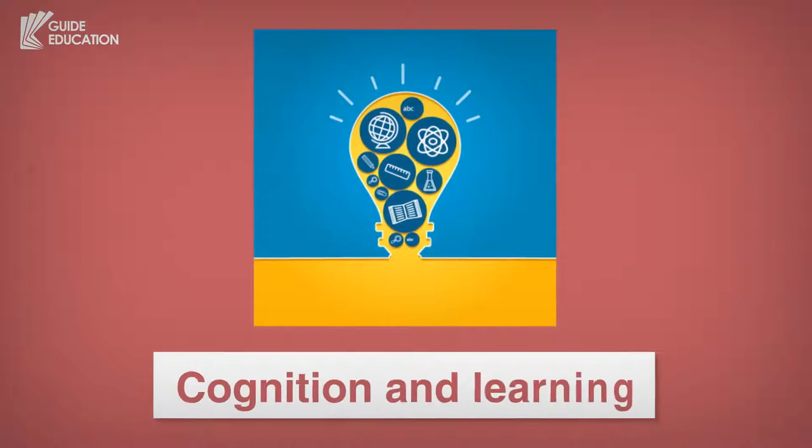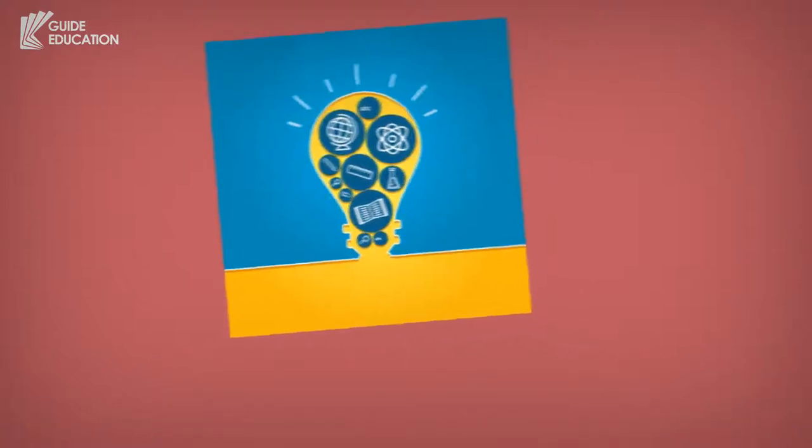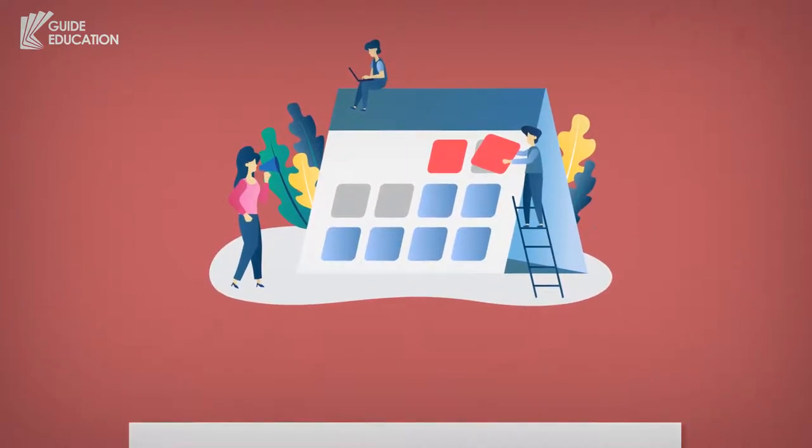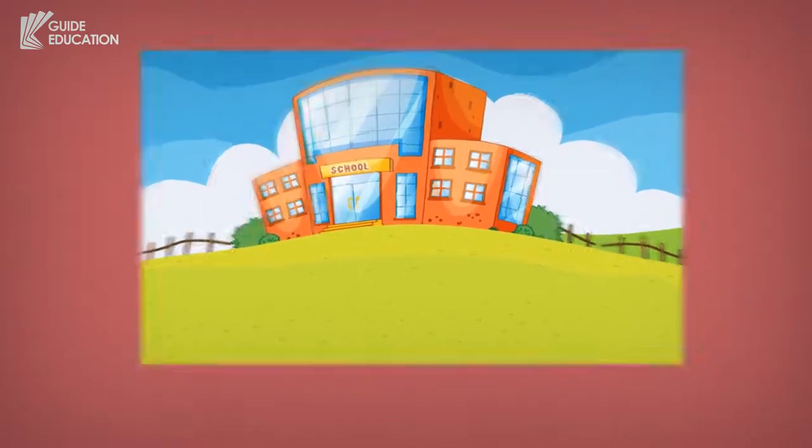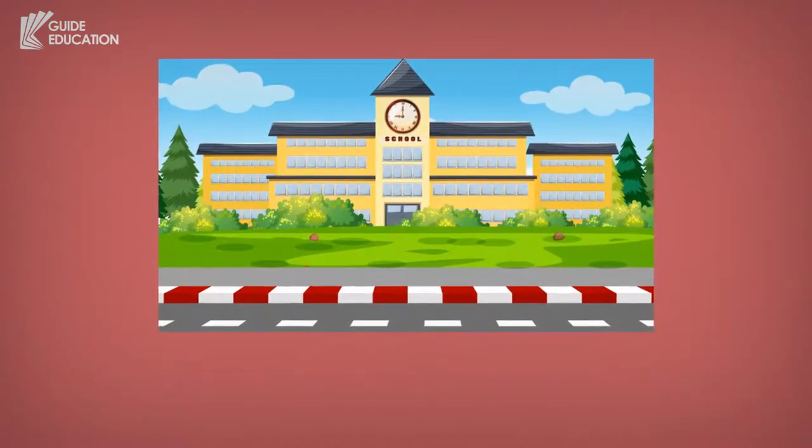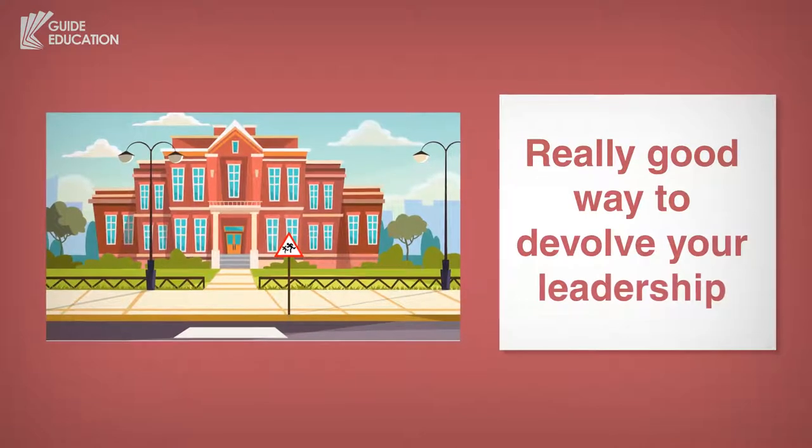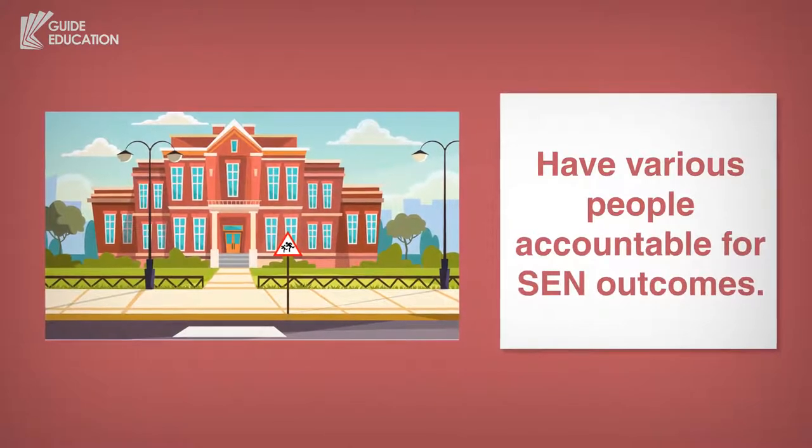So I'll start with cognition and learning, and I'm going down really a centers model, where you have one person who takes overall responsibility for cognition and learning. In a small school, of course, this won't be possible. In a middling school, it may be that the SENCO is the head of one of the centers. In a large school, this is a really good way to devolve your leadership to various people and have various people accountable for SEN outcomes.